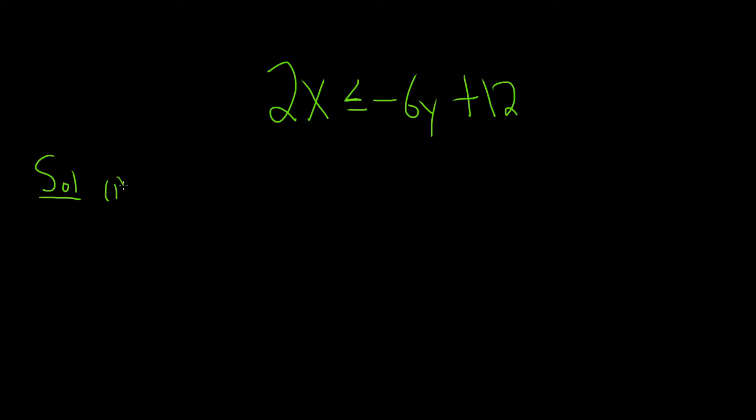The first step that I like to do in these problems is to graph the equality. So we're going to start by graphing the equality. So I pretend that it's equal to instead of less than or equal to. So we have 2x equals negative 6y plus 12. So let's go ahead and draw the x-y plane. So here's y and here's x.